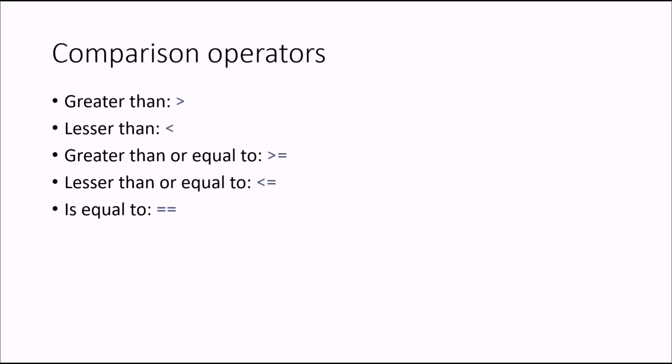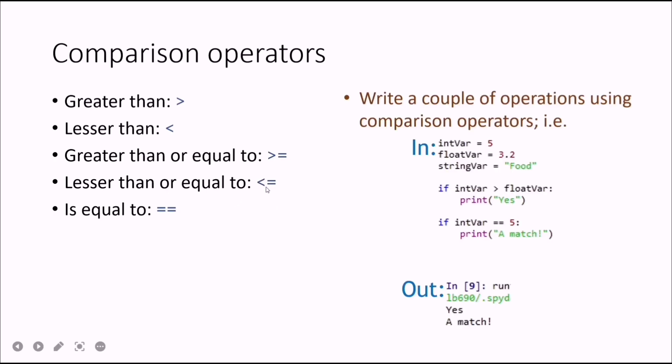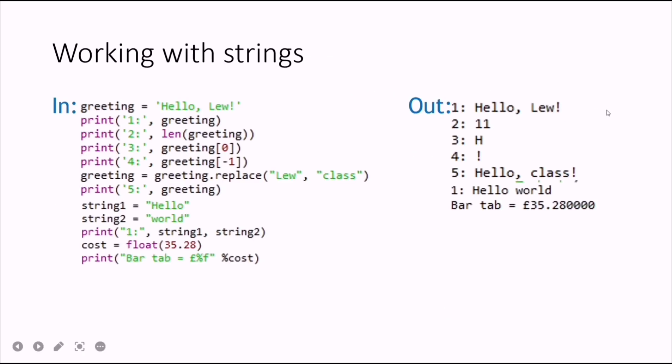Comparison operators are not that difficult. We have greater than, less than, greater than or equal to, exactly equal to, and less than or equal to. Here's an example: these are variables, not data type declarations. For understanding, we provided an int variable and float variable. If the int variable is greater than the float variable—here we have 5 and 3.2, 5 is greater than 3.2—then the output will be 'Yes'.